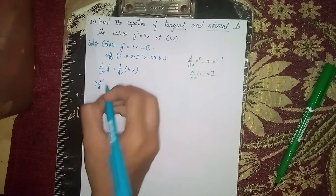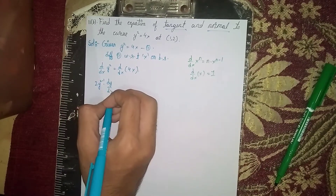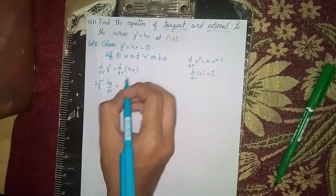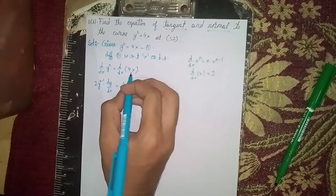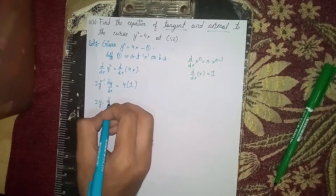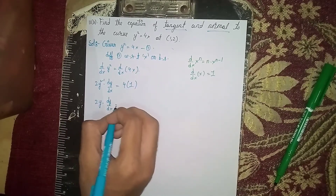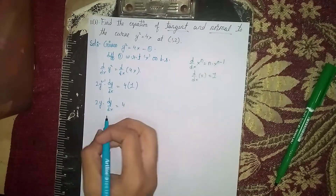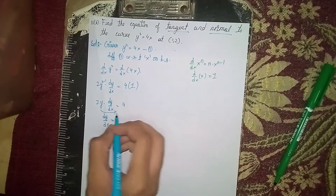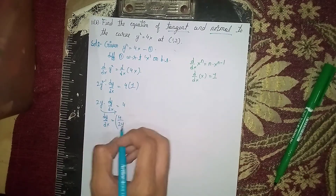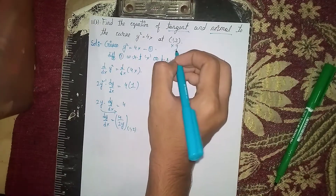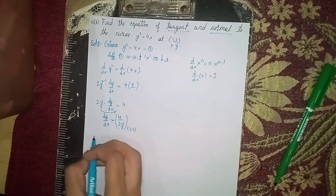Applying the power rule, d/dx of y² becomes 2y times dy/dx. On the right side, 4 comes outside and d/dx of x equals 1, so it becomes 2y dy/dx equals 4. Therefore dy/dx equals 4 divided by 2y, which we evaluate at the point (1, 2).